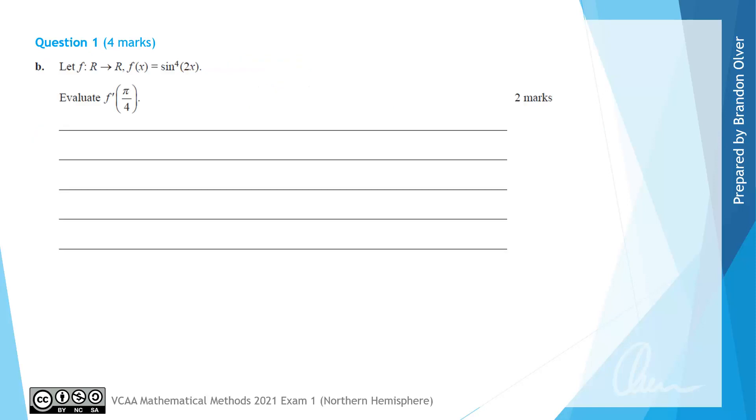For question 1b, it says, let f be the function with the domain of all real numbers where the rule of f(x) is (sin(2x))^4. So f(x) could be written as sine of 2x, and then all of that is raised to the power of 4. And that can help us identify that we need to use the chain rule to differentiate this, as the question is, evaluate f'(π/4).